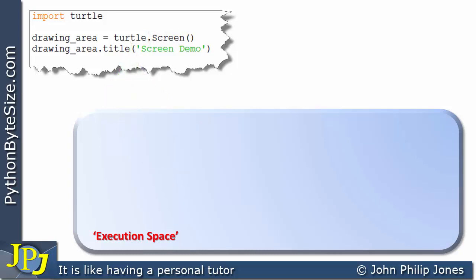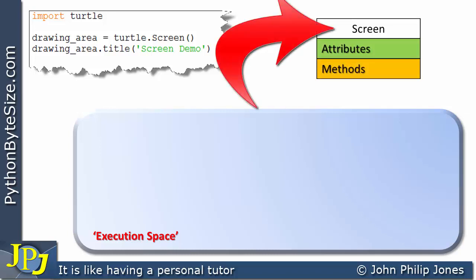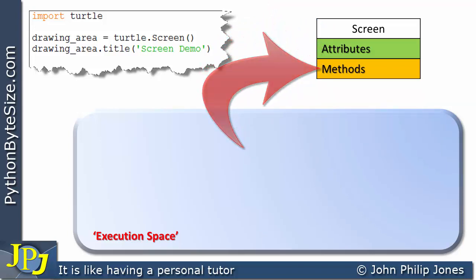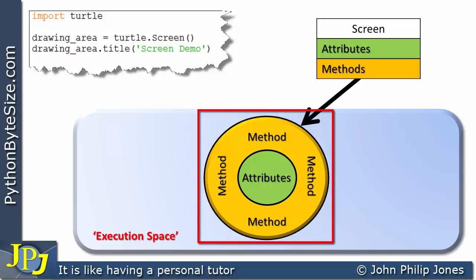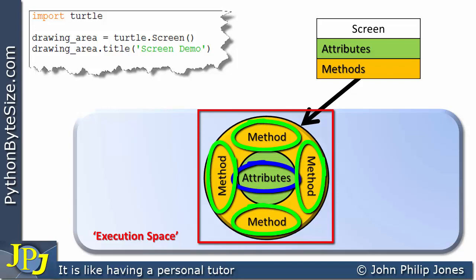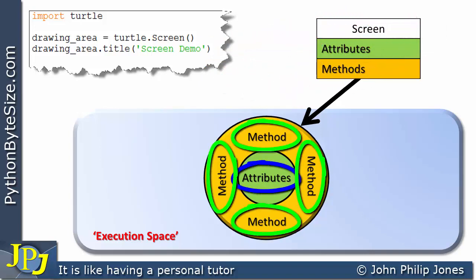Schematically, I'm going to show this class here in the diagram. We can see that the class has the name Screen, and like all classes, it'll have attributes and methods. With reference to this line, we can see that this is referring to the module, which in turn is going to use the Screen class to produce an instance of that class — producing the object. Like all objects, it has attributes and methods, where these attributes and methods have been defined in the class, in this case the Screen class.